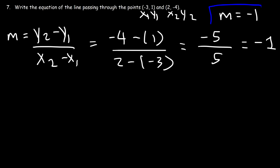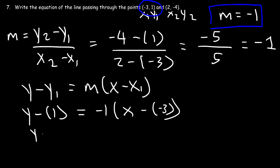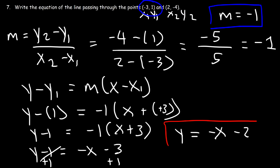Now use the point-slope formula with the first point (-3, 1). So y minus y1 equals m times (x minus x1): y minus 1 equals negative 1 times (x plus 3). Distributing the negative 1 gives y minus 1 equals negative x minus 3. Adding 1 to both sides gives y equals negative x minus 2. That's the final answer.